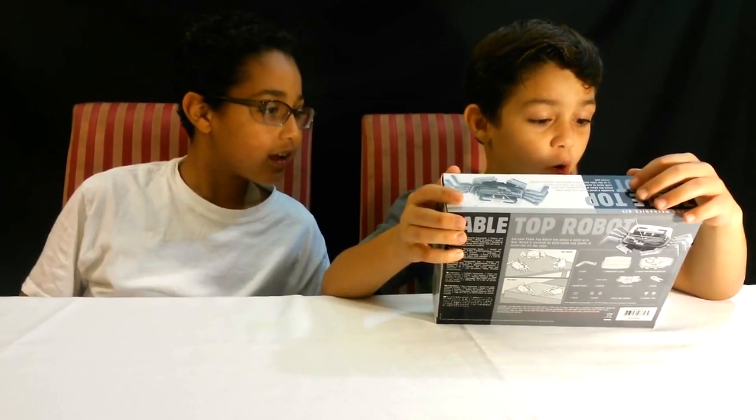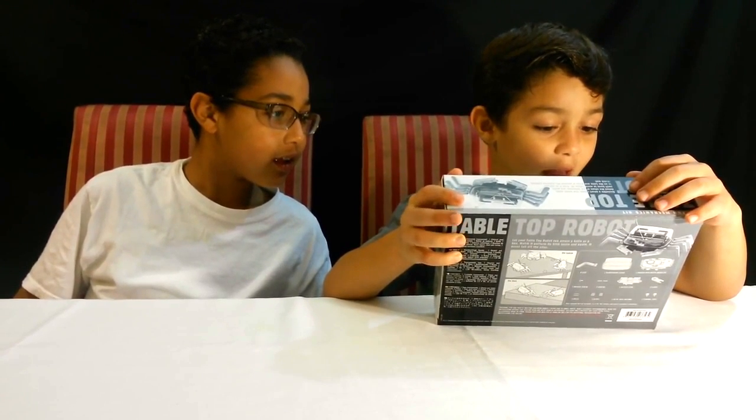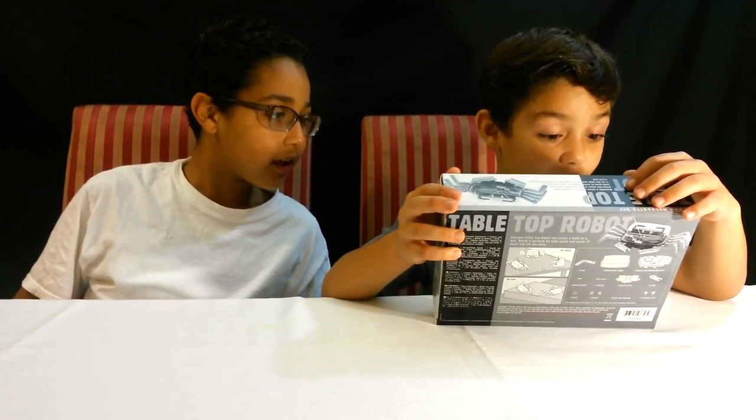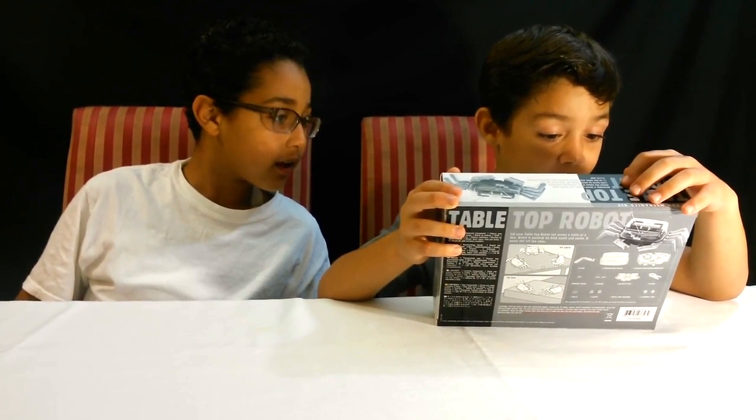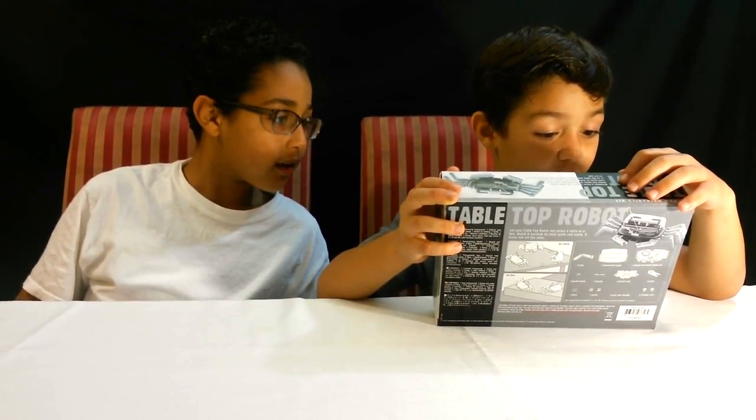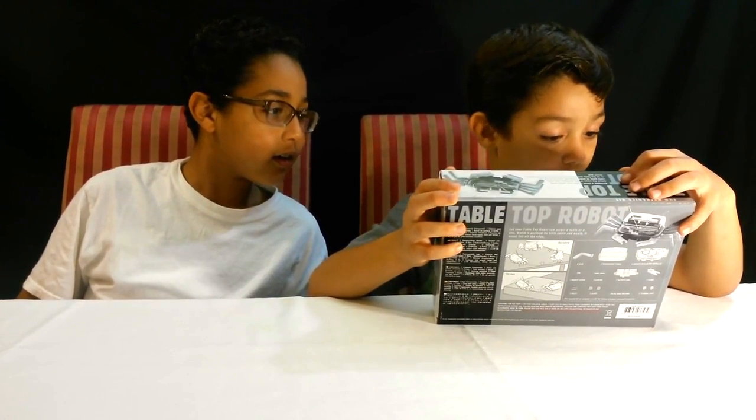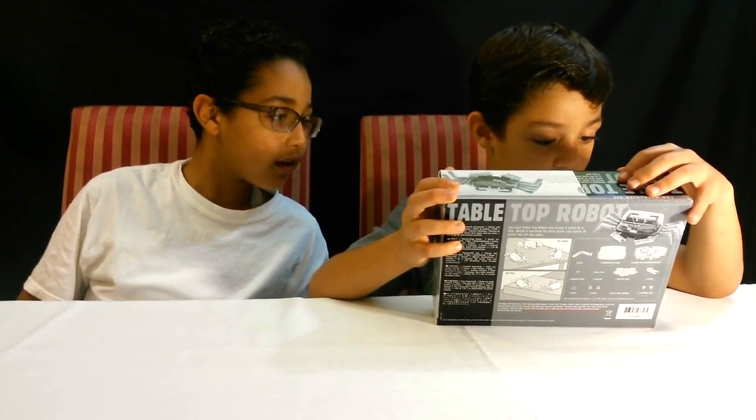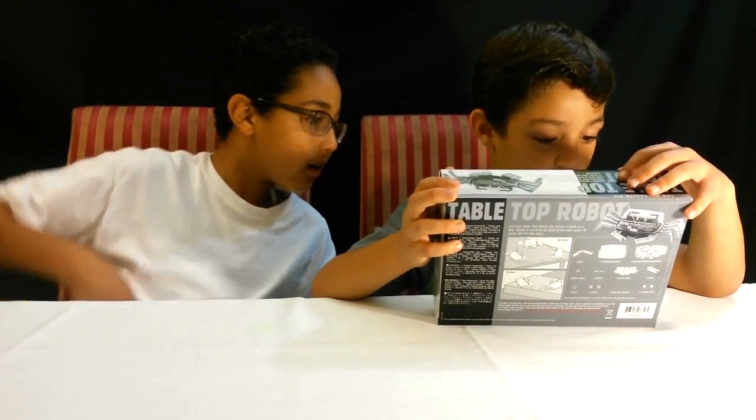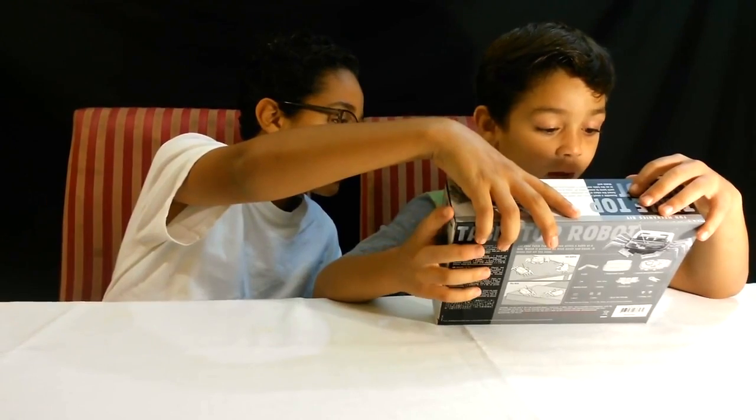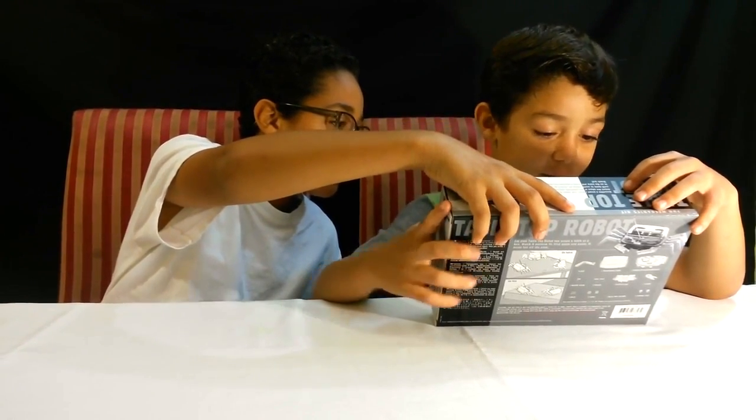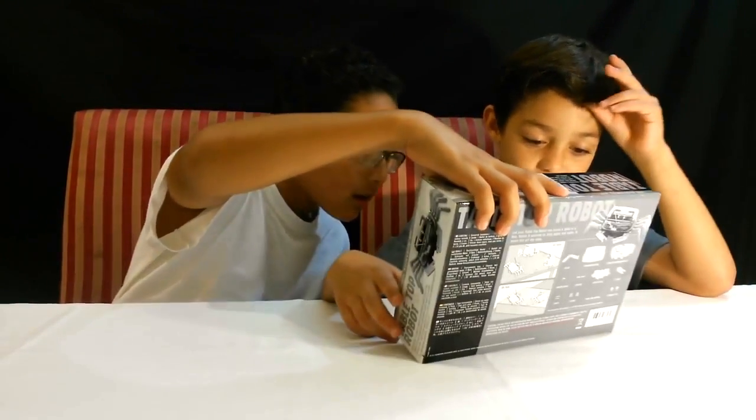So it says that assemble a smart robotic crab which could detect the edges of any platform and make swift turns to avoid falling off. Turn it on and put it on the table and watch it perform the stunning acrobat.